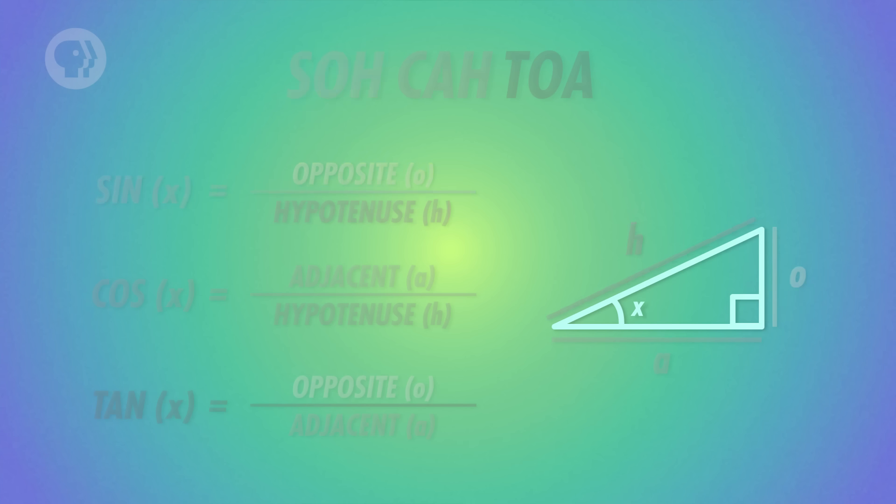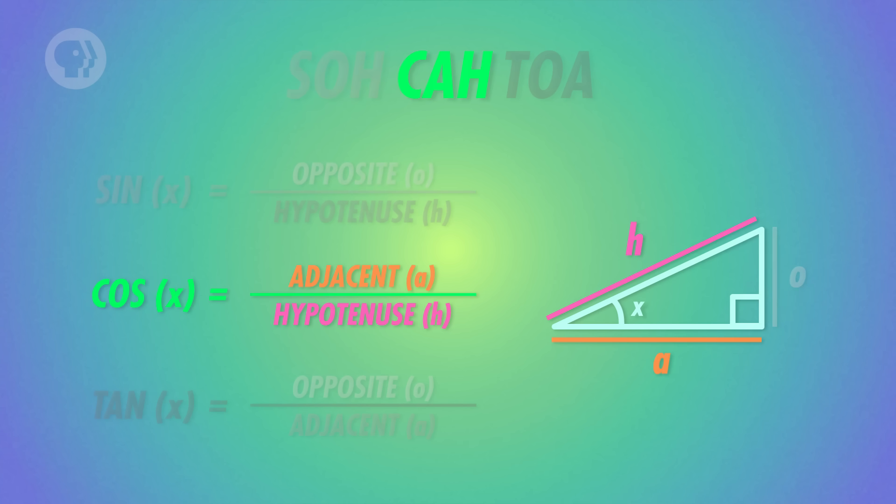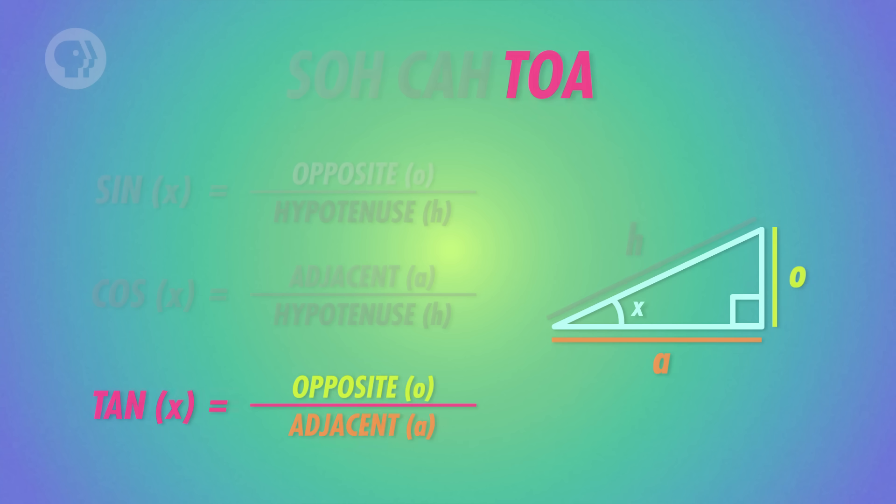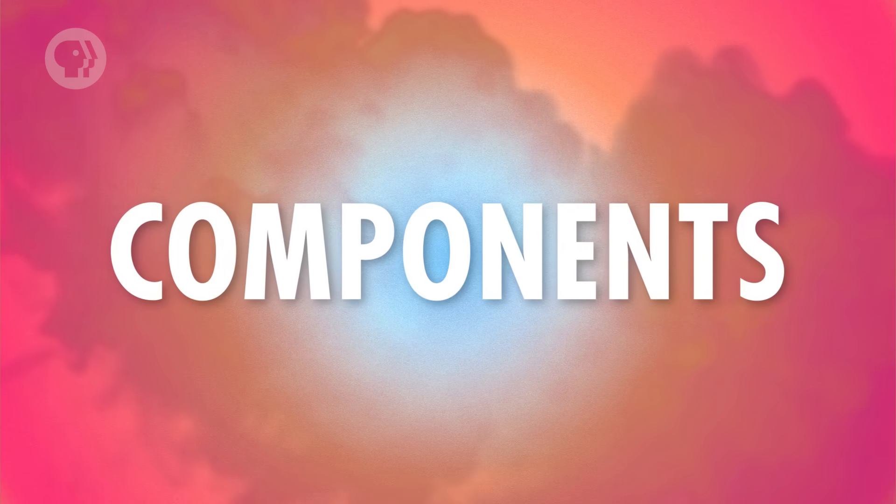Right-angled triangles are cool like that. You only need to know a couple of things about one, like the length of a side and the degrees in an angle, to draw the rest of it. It's all just trigonometry, connecting sides and angles through sines and cosines. Which is why you can also describe a vector just by writing the lengths of those two other sides. In fact, those sides are so good at describing a vector that physicists call them its components.